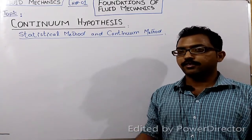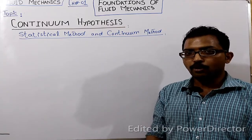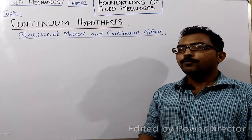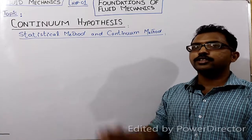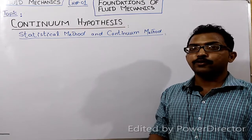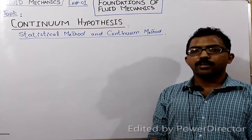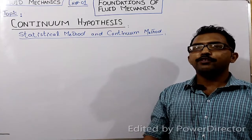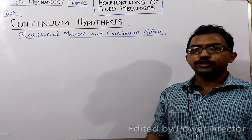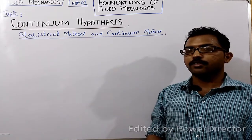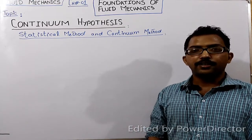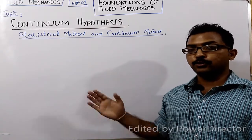The reason for this discrete distribution of matter is that there are spaces between the molecules. If we want to study a fluid property — for example, the temperature of the fluid in a certain region — one way is to study the temperature of the molecules in that region. Similarly, if we want to derive equations for the conservation laws, we have to apply the conservation principles to those molecules.